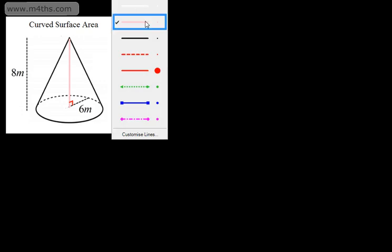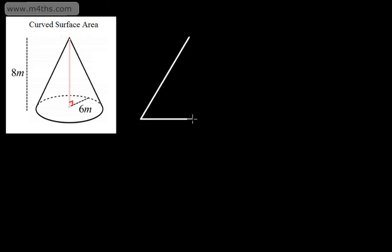What I'm going to do is drop a perpendicular down from the top of this cone to the center. This is what we call a right cone, because we have a right angle between the base radius and the height. If I drew a cross section of this, we're going to have a triangle. We have a right angle here, the base radius given as 6, the perpendicular height which is 8, and what we need to do is find the slant height.